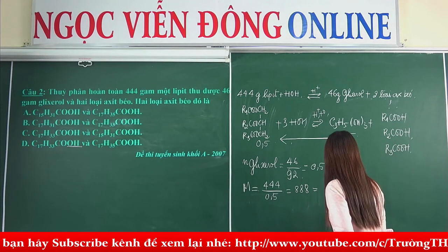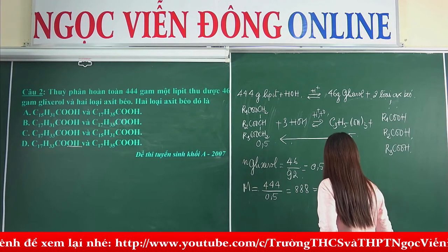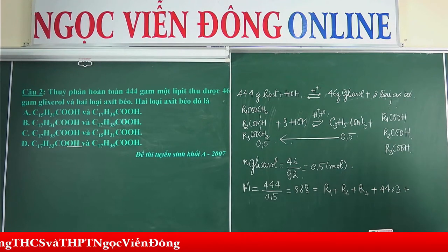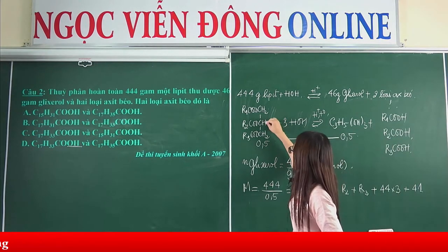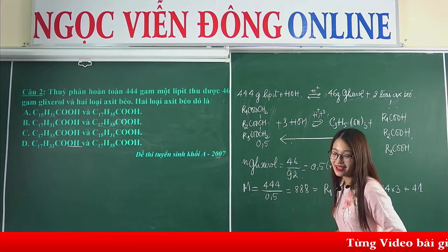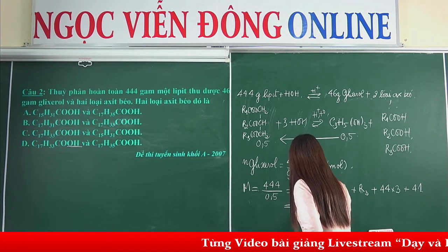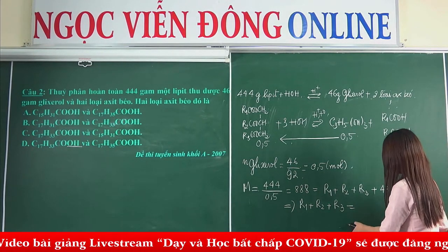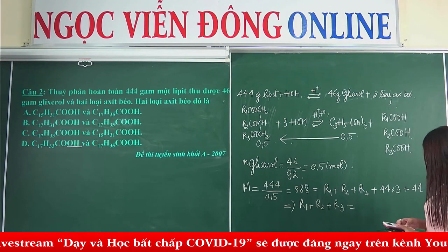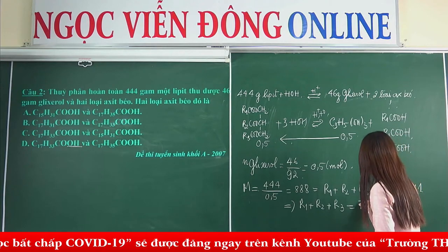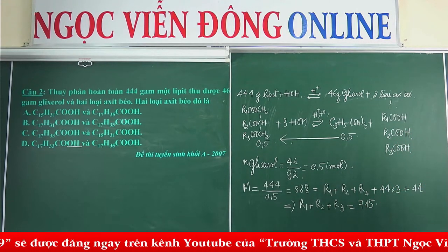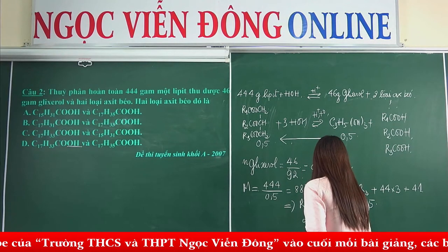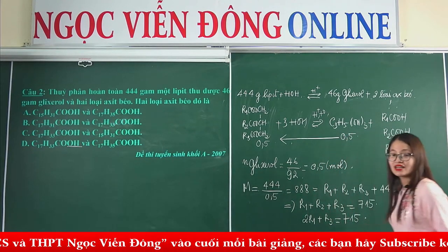888 = R1 + R2 + R3 + COO×3 (là 44×3) + C3H5 (là 41). Cô tính ra được R1 + R2 + R3 = 715. Tuy nhiên, nó phải có 2 trong 3 gốc giống nhau. Cô giả sử gốc R1 với R2 giống nhau, thì có: 2R1 + R3 = 715.